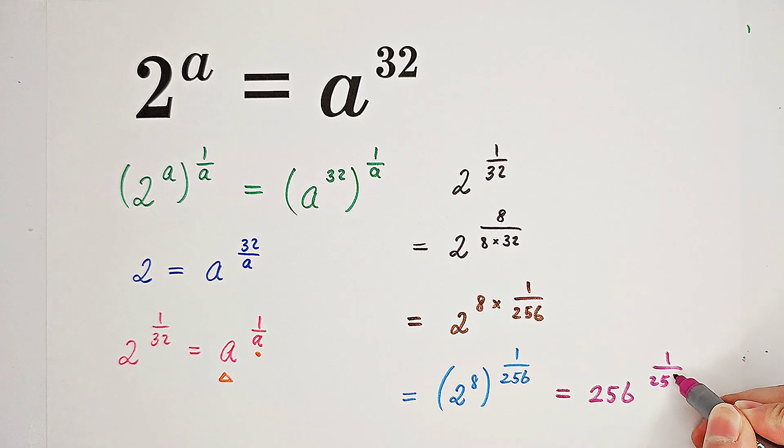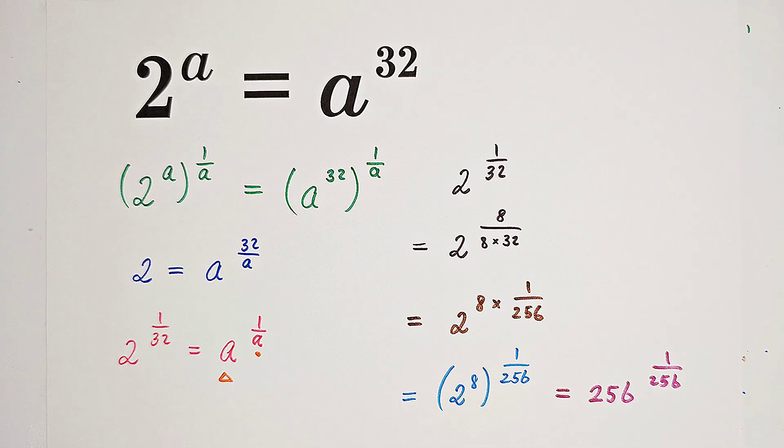So we've successfully transformed it into this form, something to the power of its reciprocal. The right-hand side has the form A to the power of 1 over A, and the left-hand side has the form B to the power of 1 over B. So that implies that A equals B.